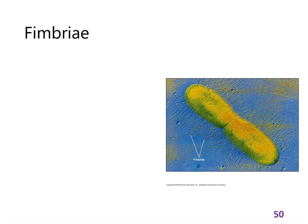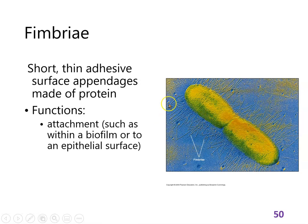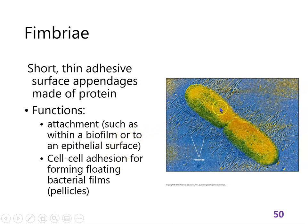These are fimbriae — short, thin, adhesive protein structures that stick off of cells. This is a scanning electron micrograph showing you the fimbriae. They're very numerous, and they would allow a cell to stick to another cell, so this bacterial cell could stick to one of your epithelial cells. Or the cells could stick together and form a mat on the surface of water, called a pellicle. That's what fimbriae do.